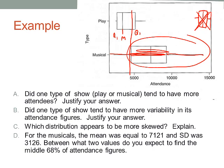Part D. For the musicals, the mean was equal to 7,121 and a standard deviation of 3,126. Between what two values do you expect to find the middle 68% of attendance figures? I'll give you a moment to actually pencil this out. Because the data from the box plot appear to be fairly symmetric, we can simply use within one standard deviation. So if we're going back to the symmetry here, here's our mean at 7,121.